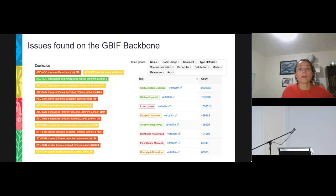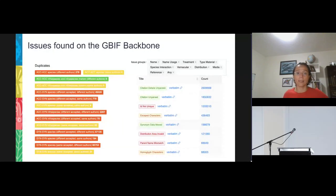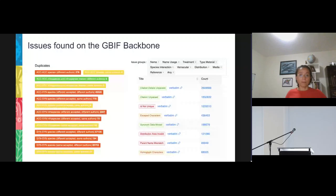Even though the GBIF backbone has the largest list of names, it still has important issues to solve, as we can see here — for example, duplicates and error or warning issues that are in different layers of information of the GBIF backbone.